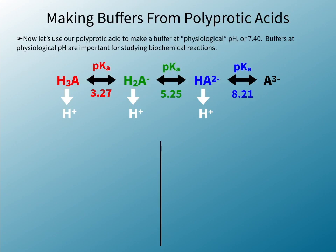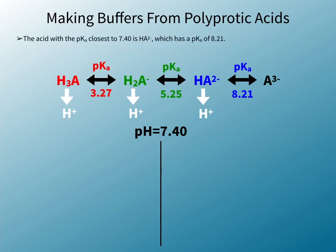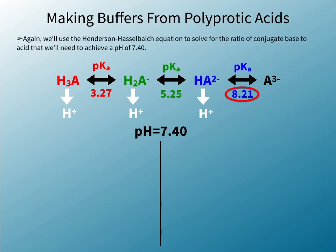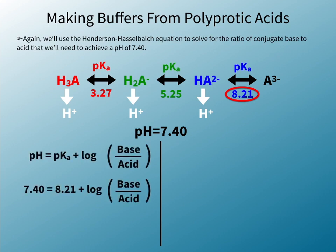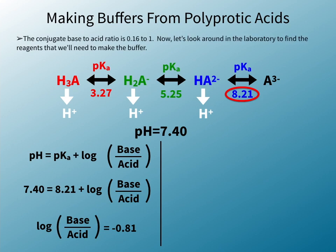Now let's use our polyprotic acid to make a buffer at physiological pH, or 7.40. Buffers at physiological pH are important for studying biochemical reactions. The acid with the pKa closest to 7.40 is HA²⁻, which has a pKa of 8.21. We'll use the Henderson-Hasselbalch equation to solve for the ratio of conjugate base to acid that we'll need to achieve a pH of 7.40. The conjugate base to acid ratio is 0.16 to 1.